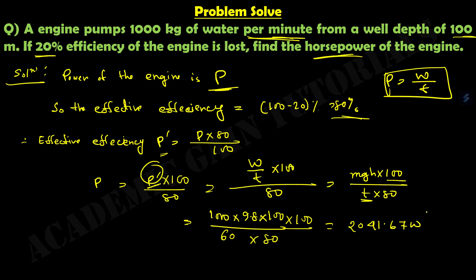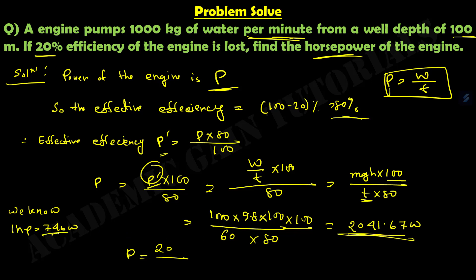We need to find the power in horsepower. We know 1 horsepower equals 746 watts. So if I divide the total watts by 746, I get 27.37 horsepower. The horsepower of the engine is 27.37 horsepower. This is the solution to our first question.